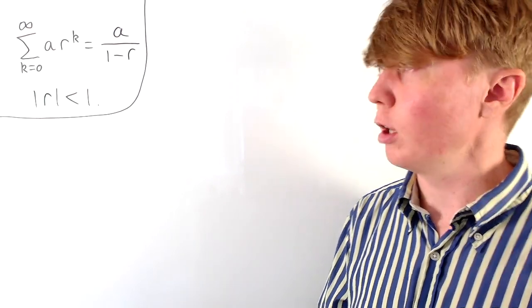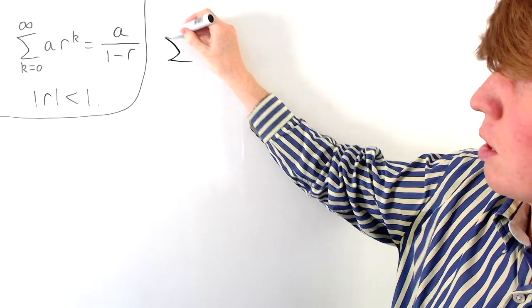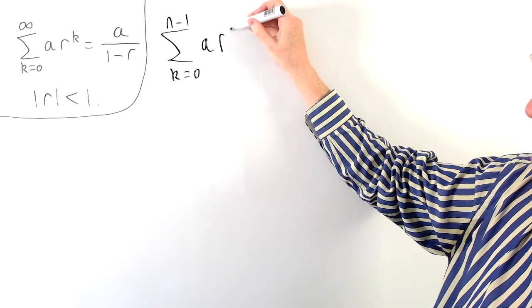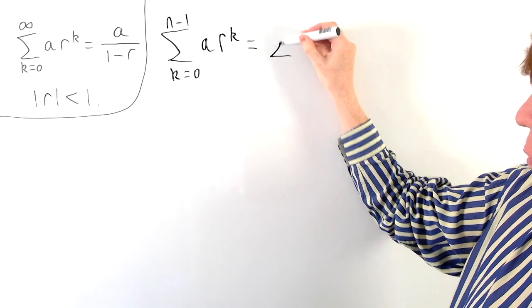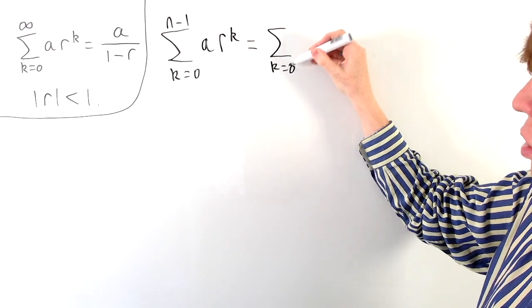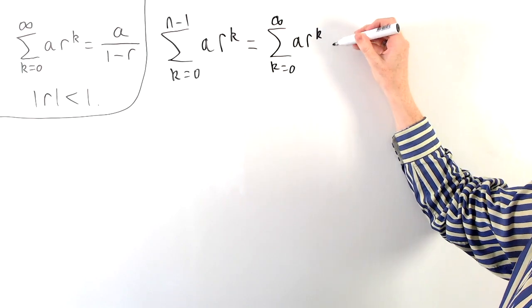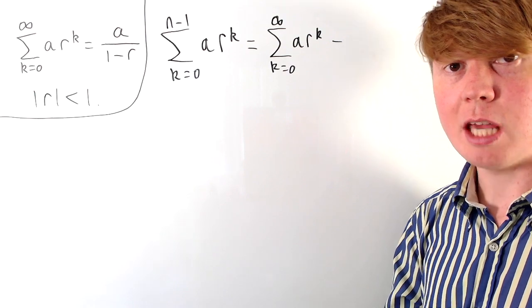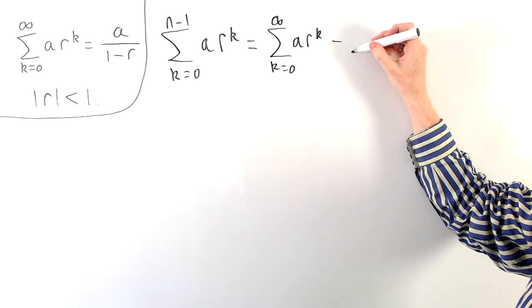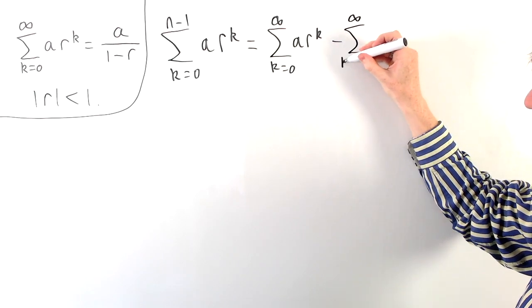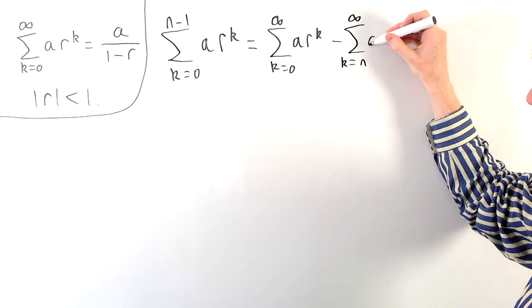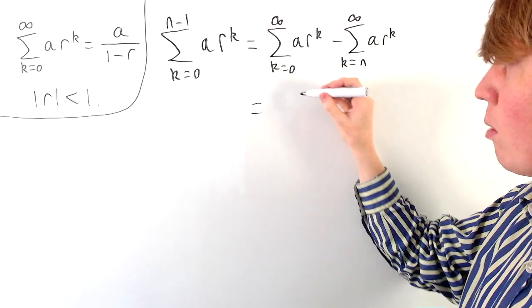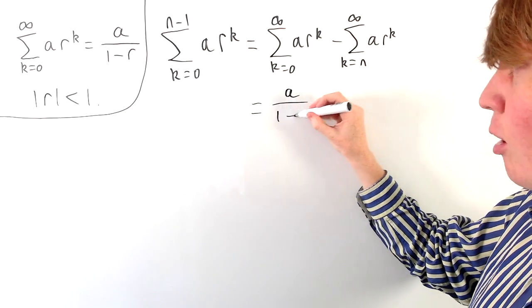Getting into our first proof: it involves writing the finite sum — say the sum from k equals 0 up to n minus 1 of our sequence — as the infinite sum from k equals 0 up to infinity of a r to the k, but then taking away the nth term, the (n+1)th term, and so on. So we take away the infinite sum beginning from k equals n of a r to the k. We can then apply the formula for the infinite sum to the first term, giving the familiar a over 1 minus r.